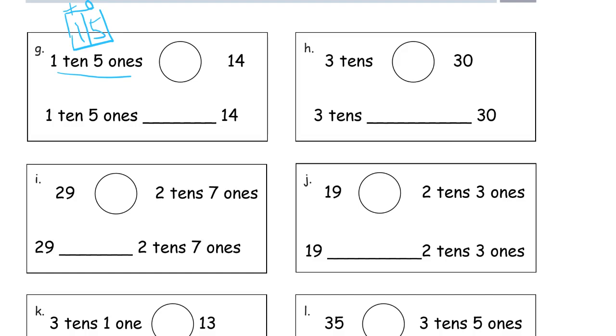15 is greater than 14, so alligator eats the 15. So 1 ten 5 ones is greater than. That's how you squeeze in your answer.